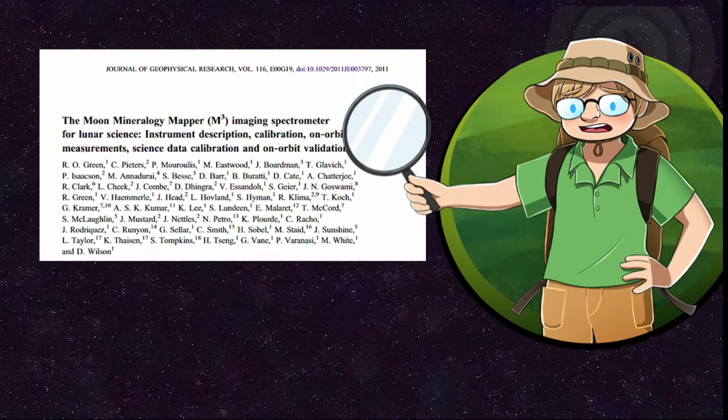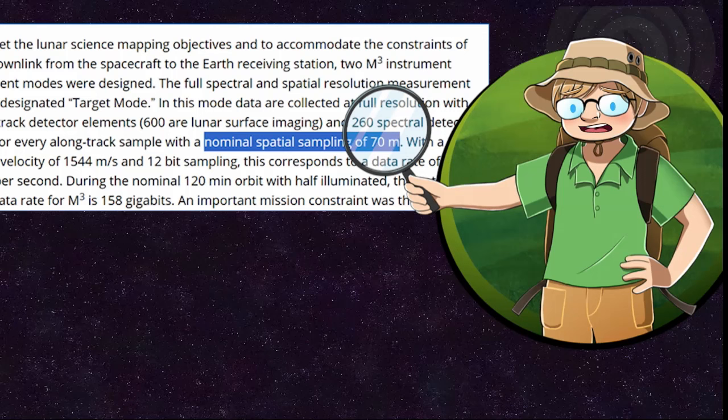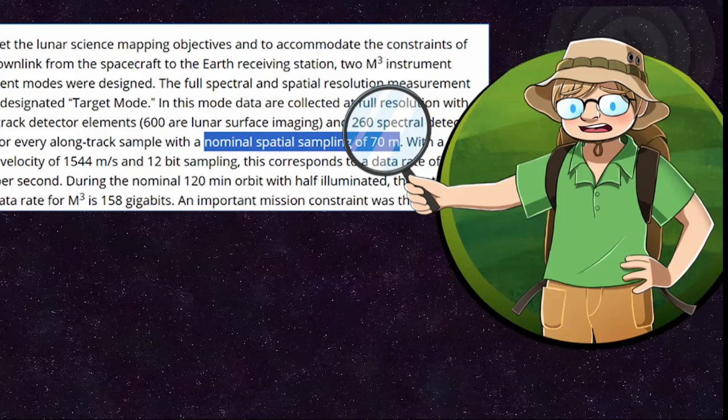Well, according to the paper describing the Mapper by R.O. Green and colleagues in the Journal of Geophysical Research, which I've attached in the description, this high resolution involves one reading, effectively one pixel, for every 70 meters. So, that's one pixel per unit of area that is much bigger than any of the dinosaur skeletons that exist on the planet. Oops!